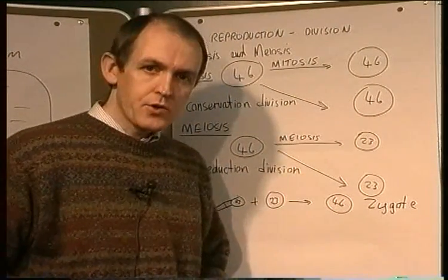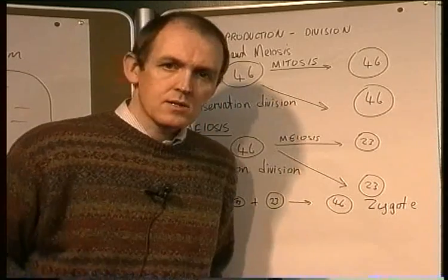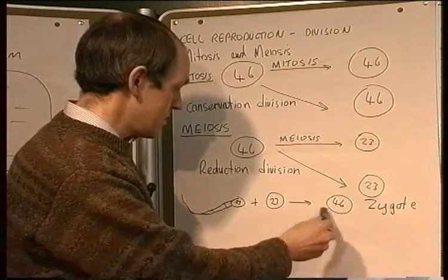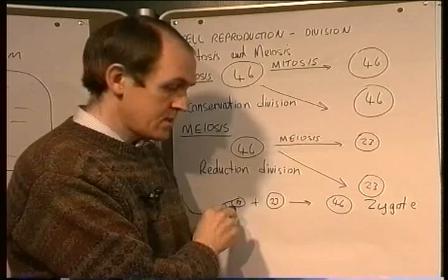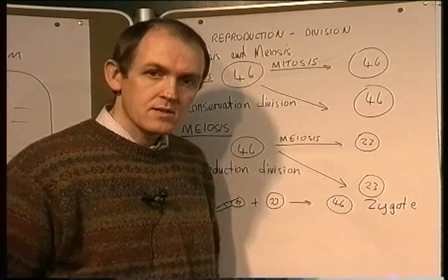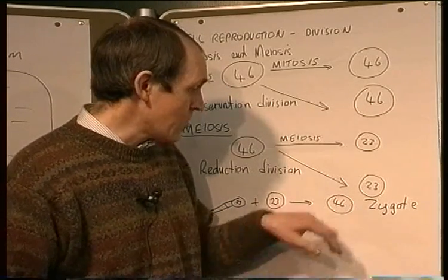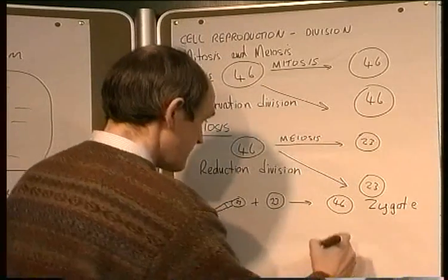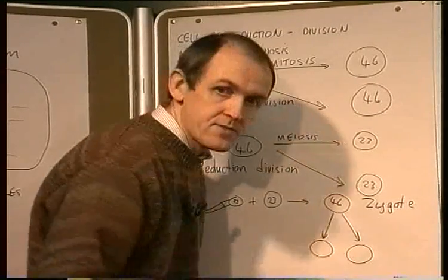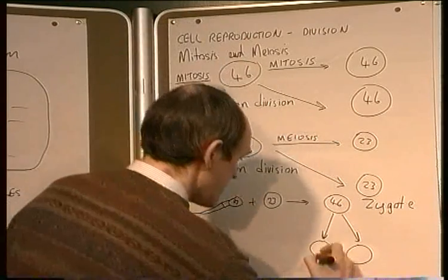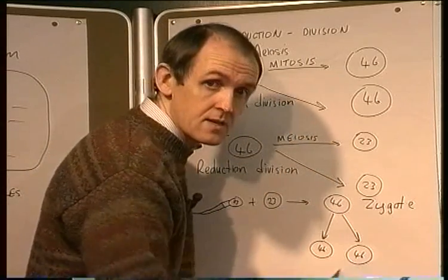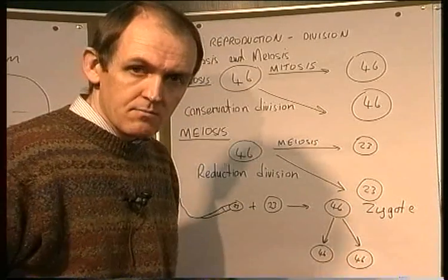At one time, you were once a single cell — just one cell, that's what you were. A sperm cell produced by meiosis fertilized an egg cell produced by meiosis to give us a zygote, a fertilized cell. What happened next was this cell divided into two, giving two cells each containing 46 chromosomes. So the number of chromosomes is conserved — therefore, this type of division is clearly mitosis.